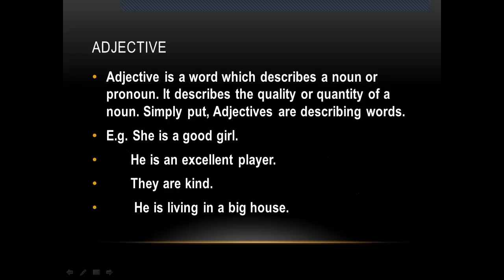An adjective is a word which describes a noun or pronoun. It describes the quality or quantity of a noun. Simply put, adjectives are describing words. For example: 'She is a good girl.' 'He is an excellent player.' 'They are kind.' 'He is living in a big house.' So adjectives are describing words. Here, 'girl' is a noun and the word 'good' is describing this noun, so 'good' is an adjective.